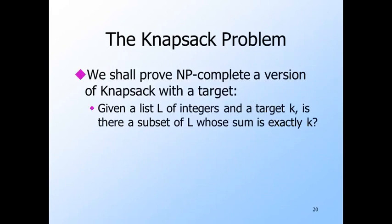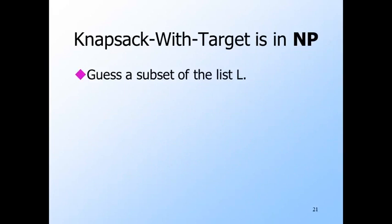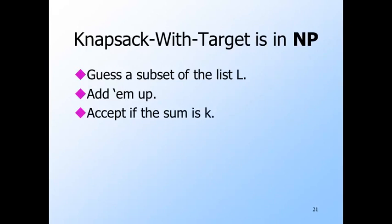Now let's revisit the knapsack problem. We're going to prove knapsack is NP-complete. It is easier first to reduce 3SAT to a variant called knapsack with target: given a list of integers L and an integer target K, is there a subset of L that sums to exactly K? Once we've shown knapsack with target is NP-complete, we'll reduce it to the real knapsack problem — given a list of integers L, can we divide L into two parts whose sums are the same? To show knapsack with target is in NP, just use non-determinism to guess a subset of L, compute the sum, and accept if that sum is exactly K.